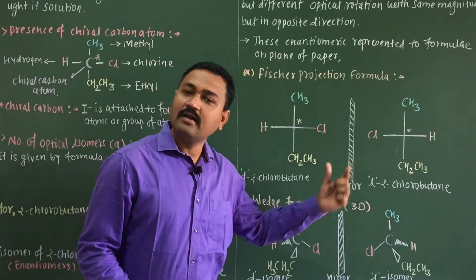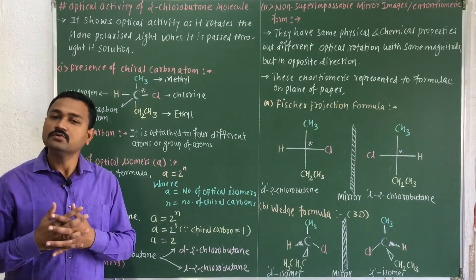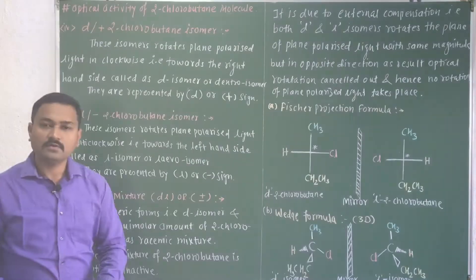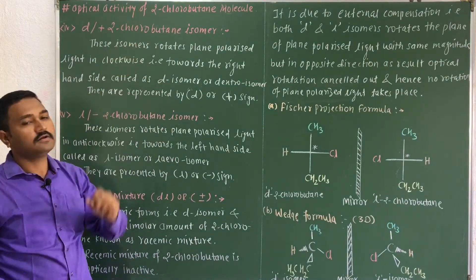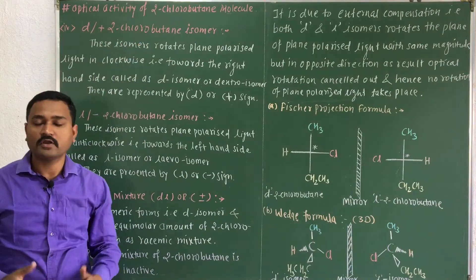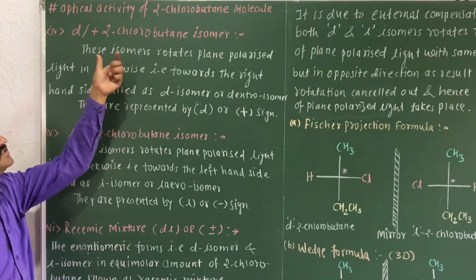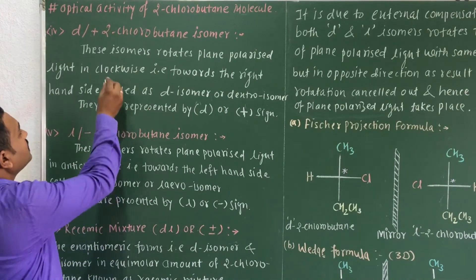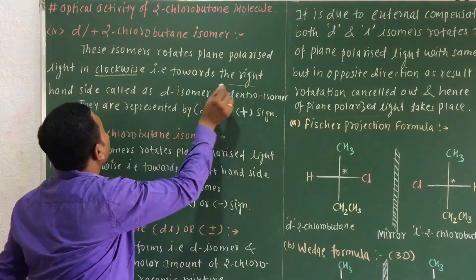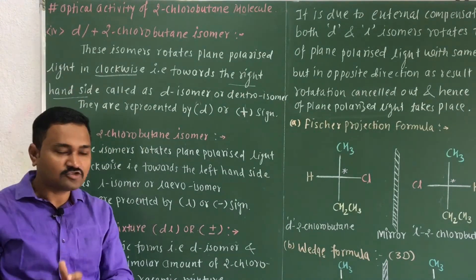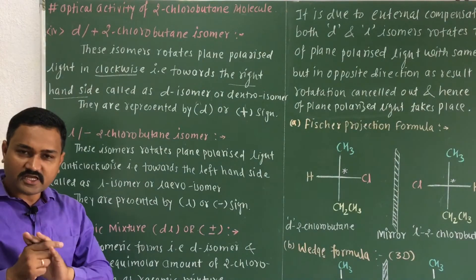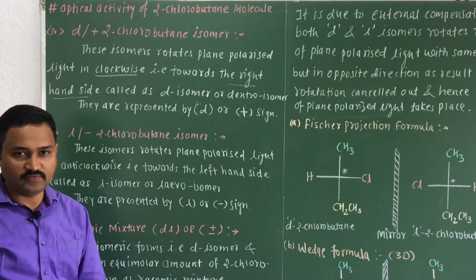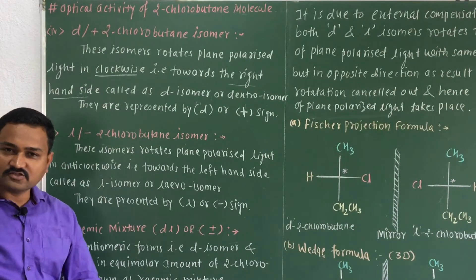The D isomer, or D-2-chlorobutane, is the isomer which rotates the plane polarized light in the clockwise direction — that is, towards the right-hand side. This isomer is known as the dextro isomer. It is represented by a small 'd' or a plus sign (+) in optical activity notation.